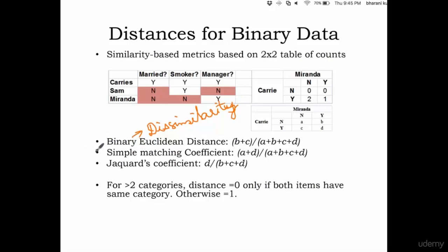And you have this measure which is simple matching coefficient. No and no, yes and yes. So it is capturing the similarity, right? In both places no, both places yes. This is capturing the degree of similarity. And that's called a simple matching coefficient. A plus D divided by total count.